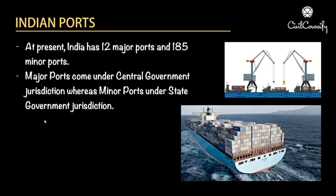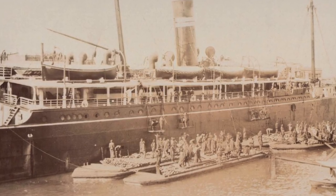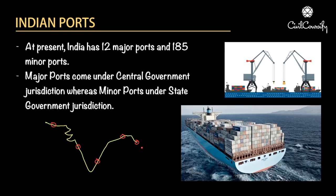In colonial times, if we look at the colonial map of India, the sea coast started from today's Pakistan and extended till Bangladesh, as all of it was part of colonial India. Some of the important ports in those times were Karachi, Mumbai, Chennai, Kolkata and Chittagong. This is how the British were taking care of all the trade to the western part of the world, predominantly to Europe, and to the eastern part of the world.